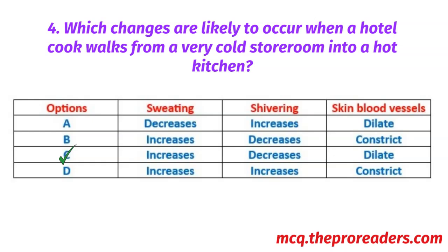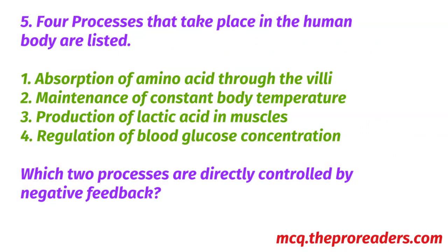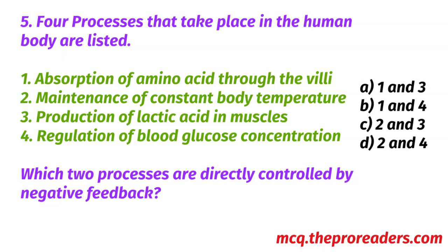4 processes that take place in the human body are listed: 1. Absorption of amino acids through the villi. 2. Maintenance of constant body temperature. 3. Production of lactic acid in muscles. 4. Regulation of blood glucose concentration. Which two processes are directly controlled by negative feedback? A. 1 and 3. B. 1 and 4. C. 2 and 3. D. 2 and 4. Option D, 2 and 4, is the correct answer.